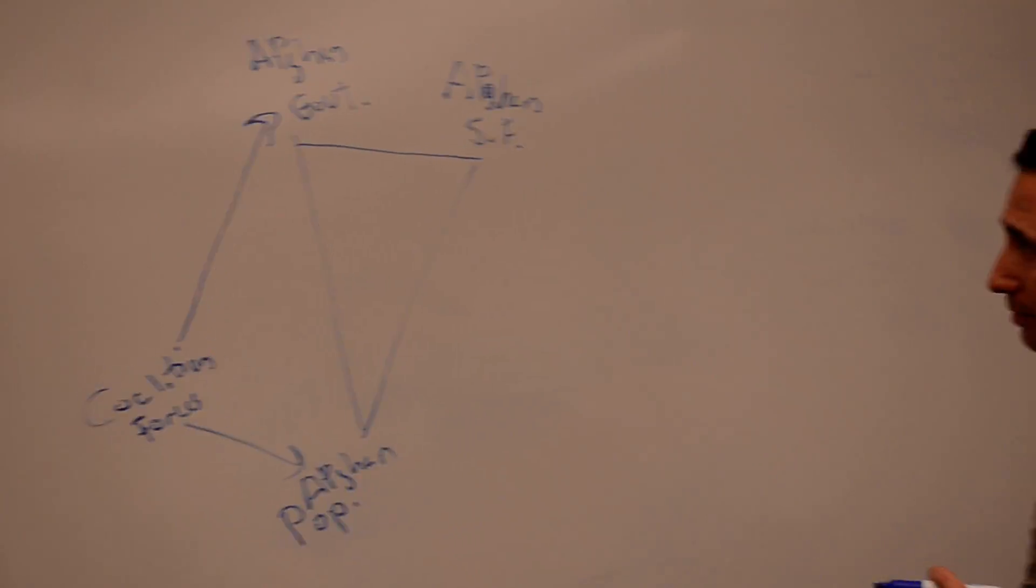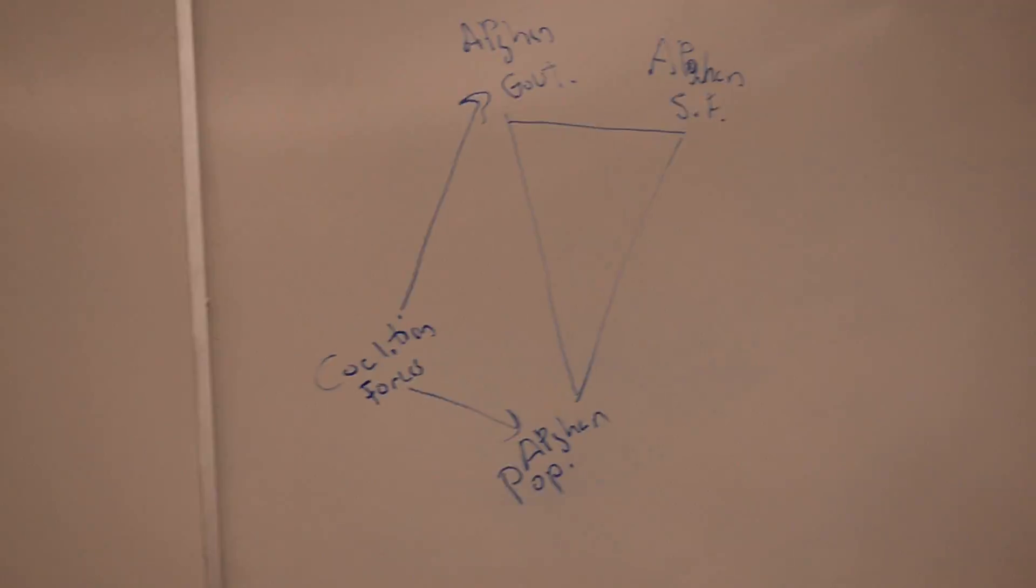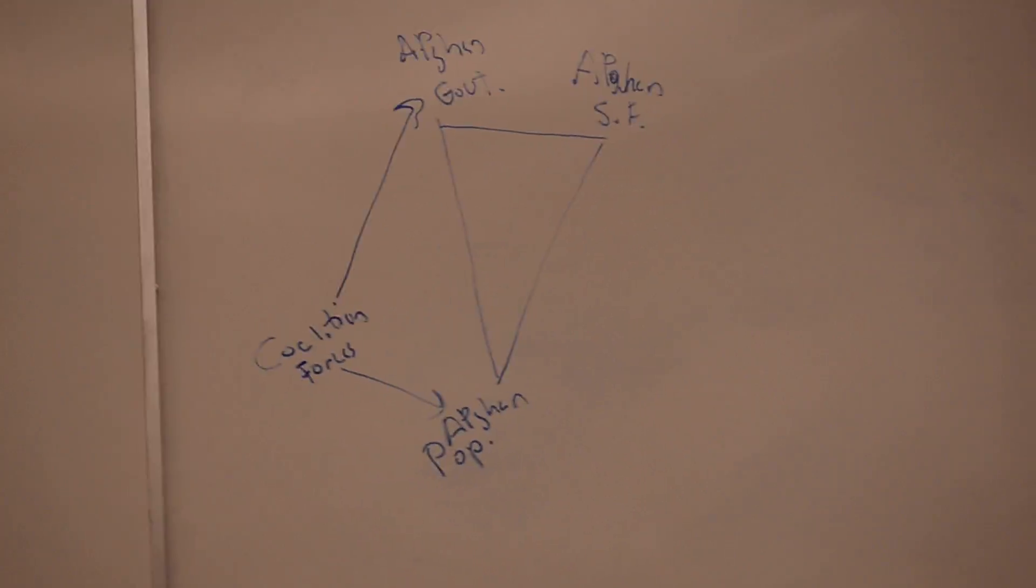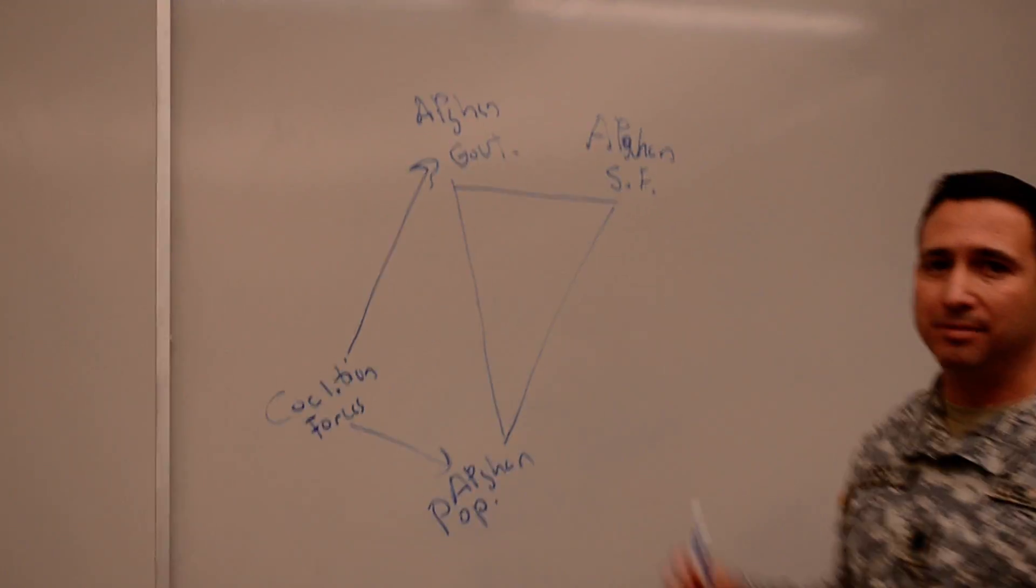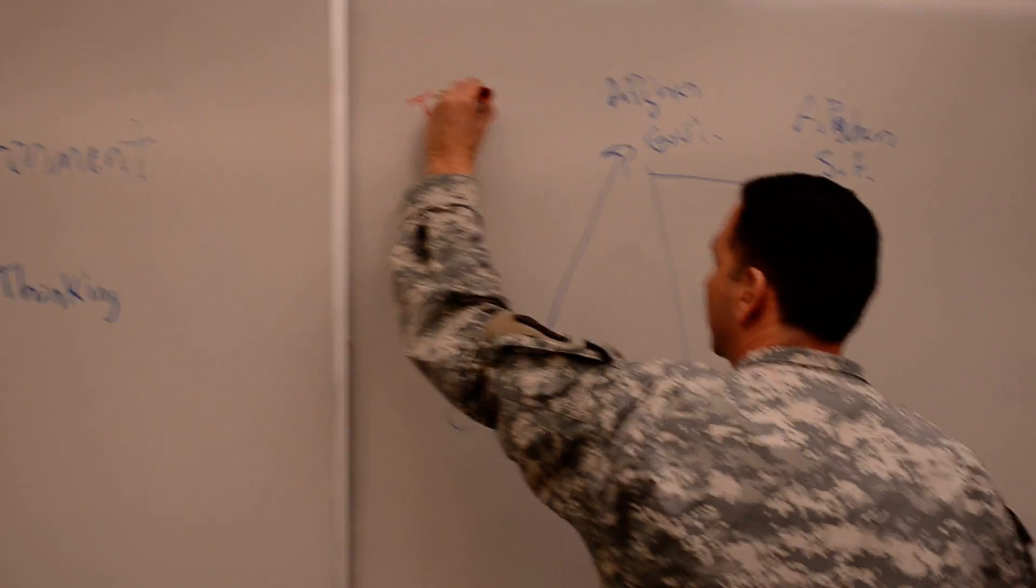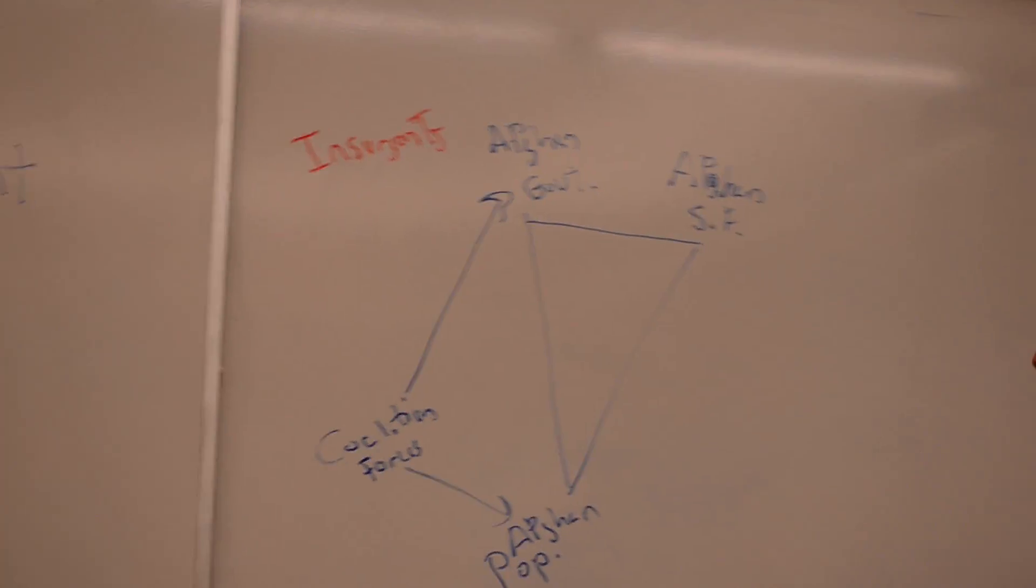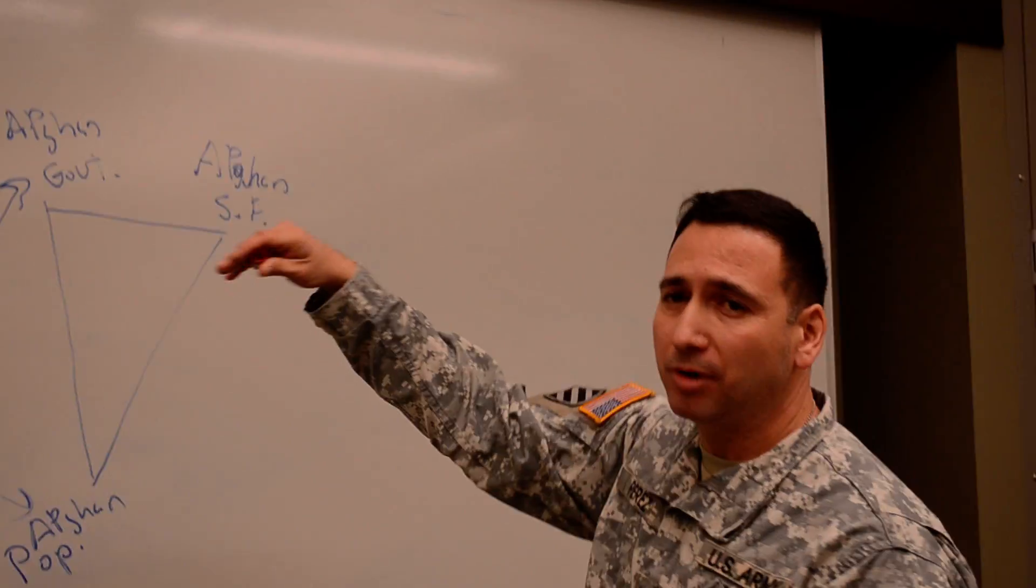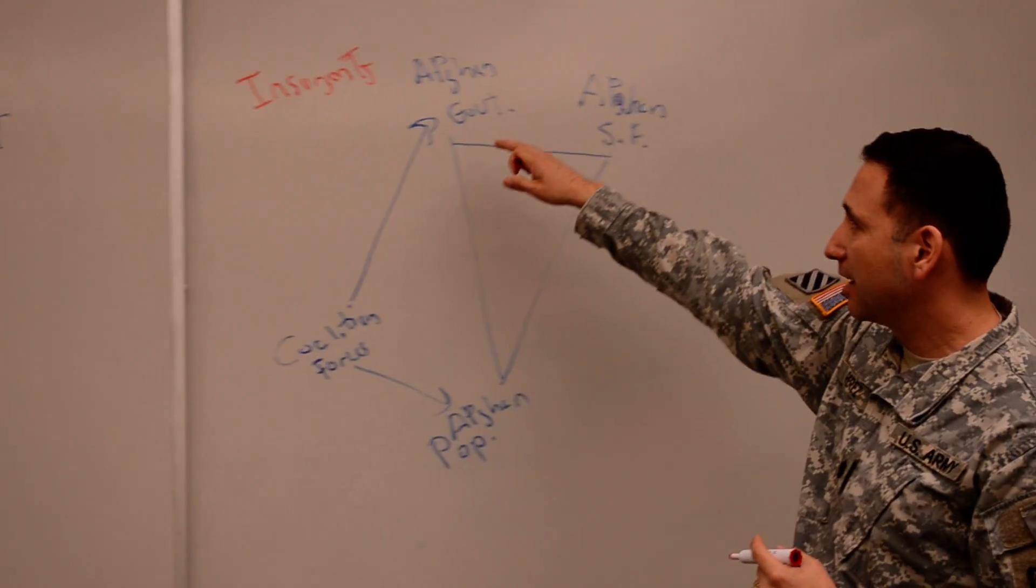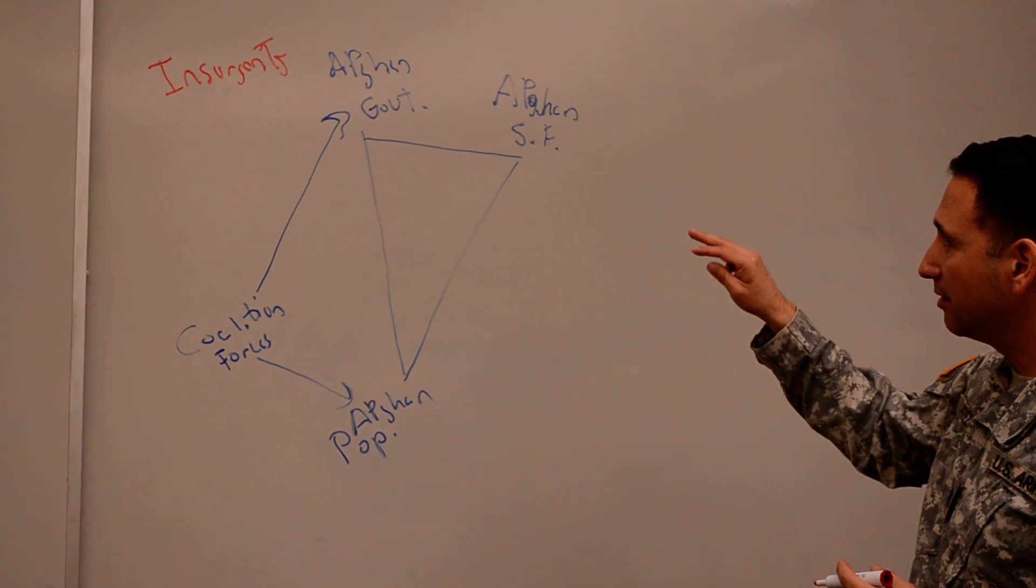But there was a problem. The problem we had is that there were enemies of the Afghan people, which General Rodriguez called enemies of the Afghan people. This included insurgents. There were many kinds, many different types, many groups within them, but we'll leave it at that for right now. The insurgents were the most obvious obstacle. They were preventing the coalition forces and the Afghan government from achieving the desired end state of a stable, secure Iraq.